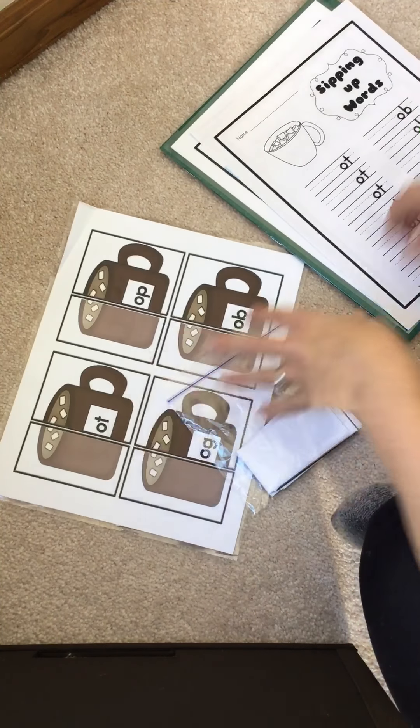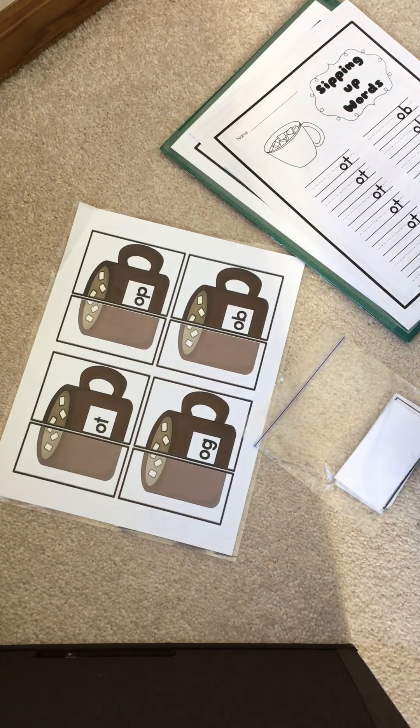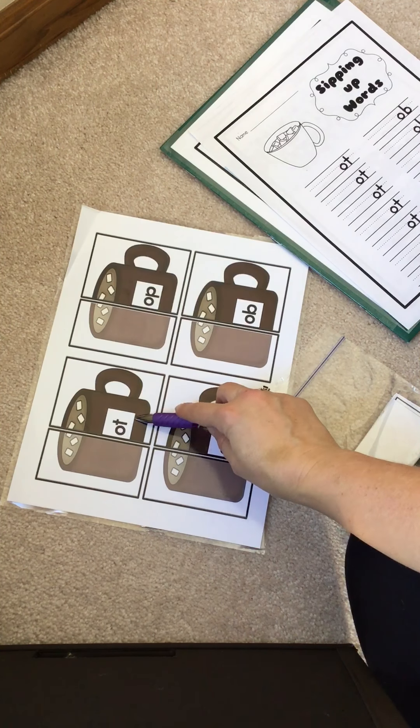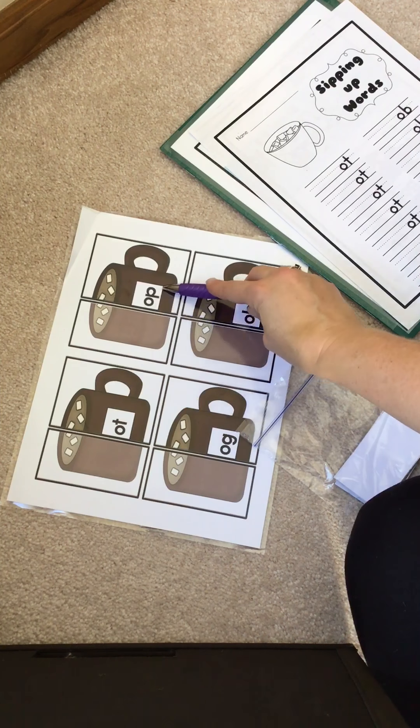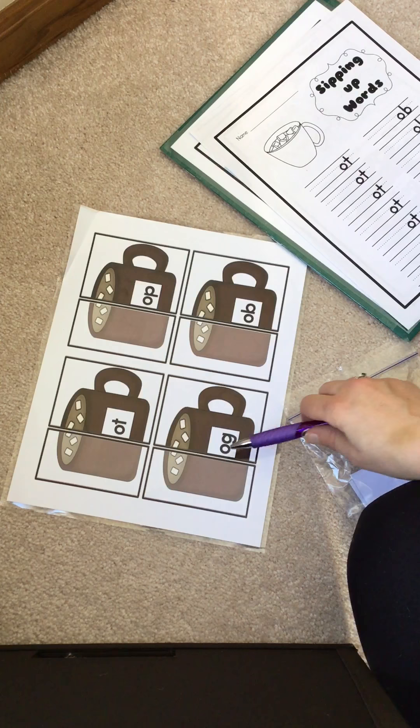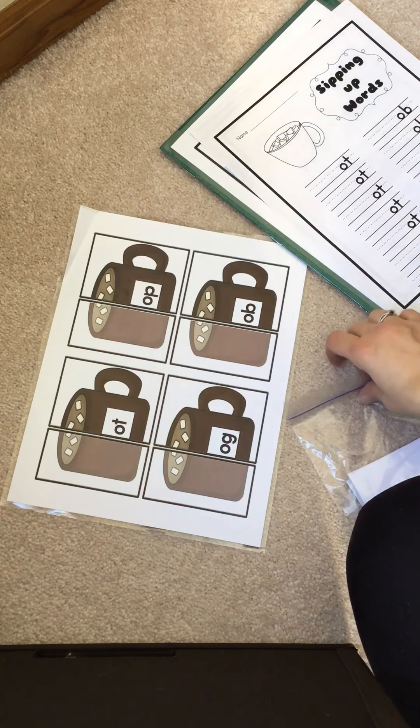All right, so look at the mugs. They have part of the ending of words. Here this one has 'ot', this one has 'op', this one has 'ob', and this one has 'og'. So I have to put a letter at the beginning to make a real word.